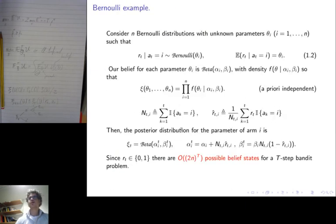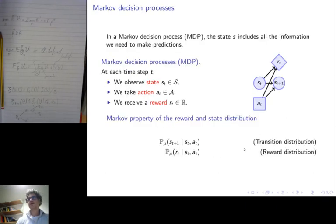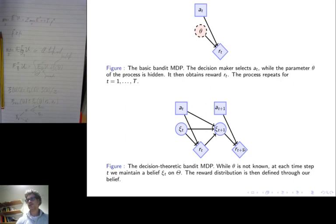If you go back here, we have an alpha parameter it for arm i at time t, which describes what we know about arm i, together with this parameter beta it. So these parameters now are the state of this process. And what we would like to do is maximize expected utility over this process.